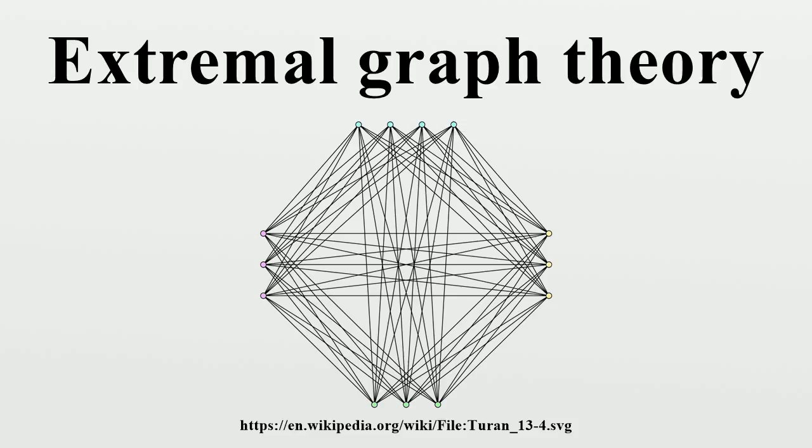A typical result in extremal graph theory is Turan's theorem. It answers the following question: What is the maximum possible number of edges in an undirected graph G with n vertices which does not contain K3 as a subgraph? The complete bipartite graph where the partite sets differ in their size by at most one is the only extremal graph with this property.